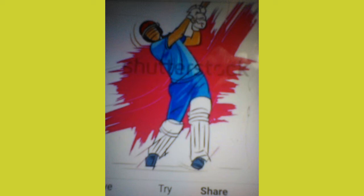6. No ball: a ball bowled directly above the waist of a batsman without pitching on the ground is a no ball. Also, if a bowler's foot crosses the popping crease while delivering the ball, then it is called a no ball.